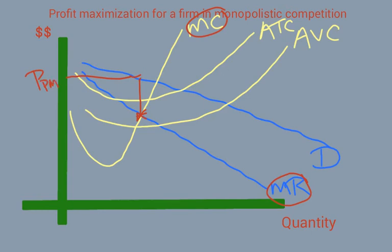We'll call it PPM, profit maximizing price. The quantity is right there, QPM.